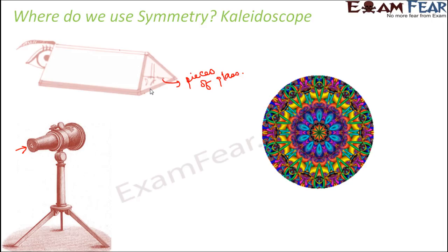Because of the placement of mirrors at certain angles to each other, the images formed in one mirror and the images formed in another mirror are all symmetric, and many such symmetric images together form a complete image. When you look at a kaleidoscope pattern, it actually consists of small parts formed by separate mirrors, but these parts are symmetrical to each other. This is how symmetry plays a role, and because of symmetry we are able to see the complete pattern in a kaleidoscope.